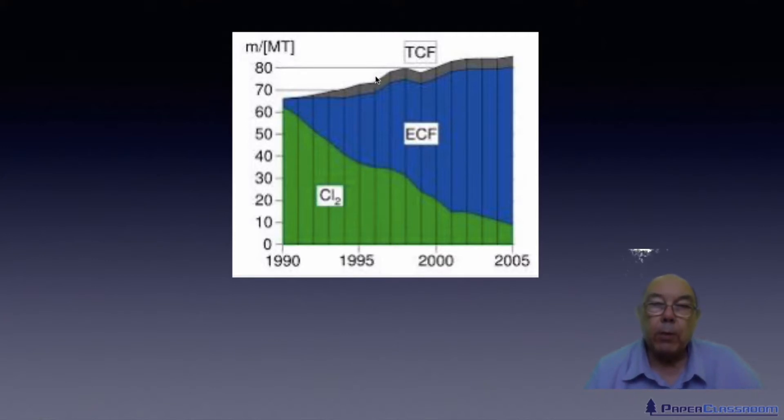It's very small, but very slowly growing. There's another type of bleaching that goes on, known as TCF bleaching. TCF bleaching means totally chlorine free. So, we use chemicals that don't have any chlorine associated with them at all. So, we're using things like oxygen, or hydrogen peroxide, or ozone.